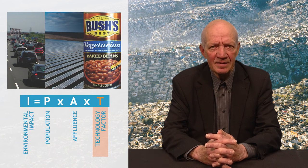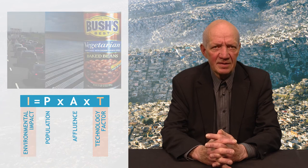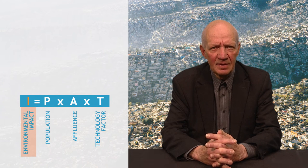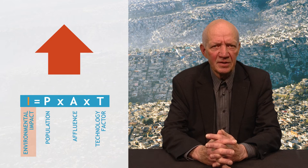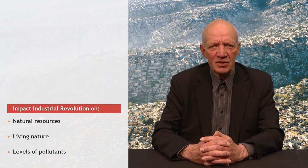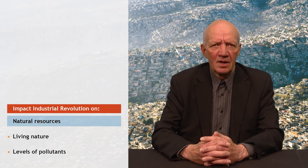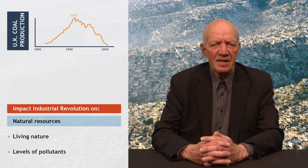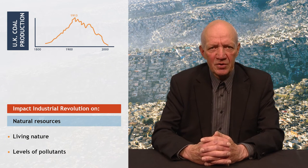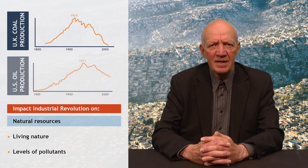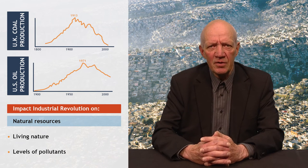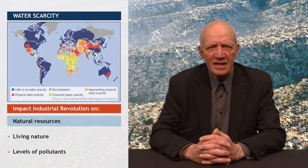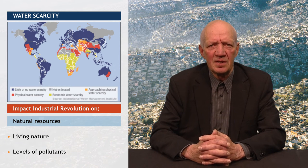Overall, the net burden of mankind on the environment — the I in the IPAT formula — has much increased since the beginning of the Industrial Revolution, and this has consequences. One aspect thereof is the depletion of natural resources. Coal production in the United Kingdom peaked in 1913, and the production of conventional oil in the United States peaked in 1971. The next slide shows current water scarcity, which is partly linked with the depletion of fresh water resources by human activities.